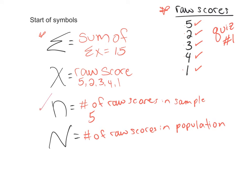So little n is the number of raw scores in a sample, and big N is the number of raw scores in a population.